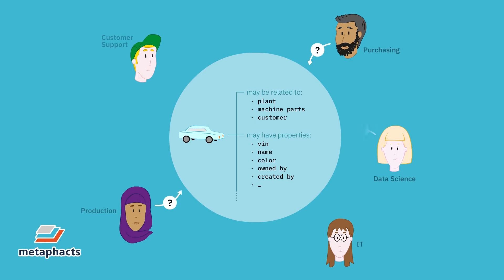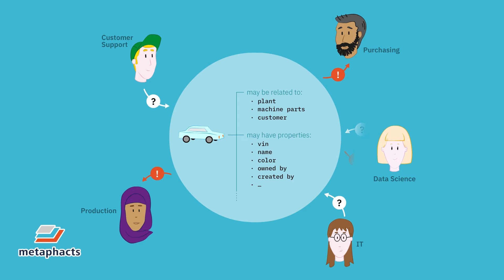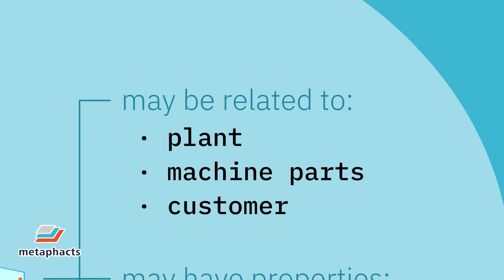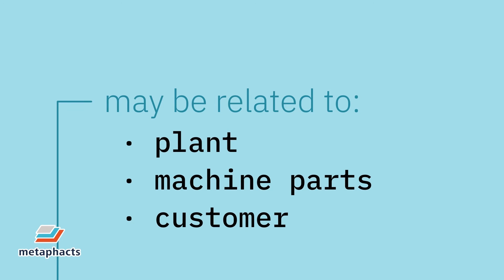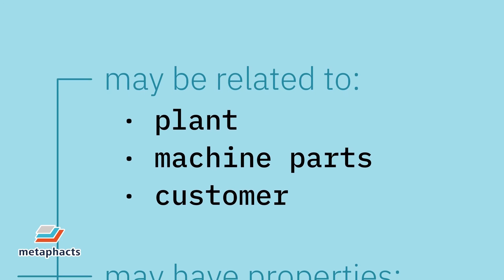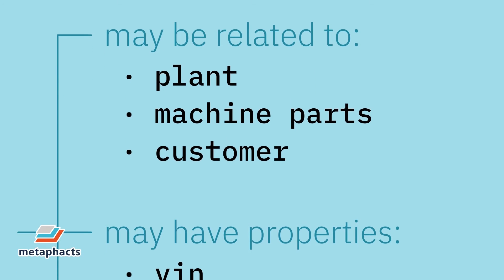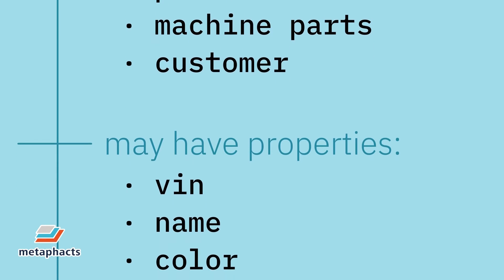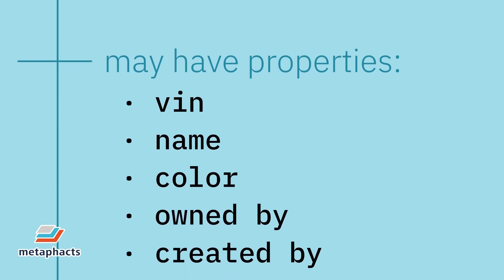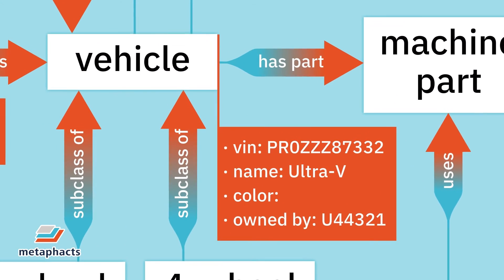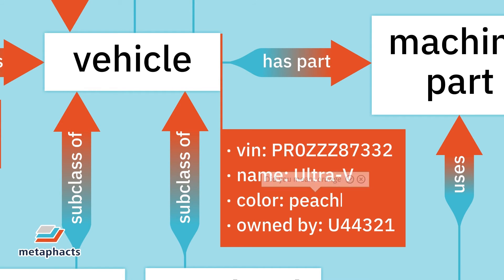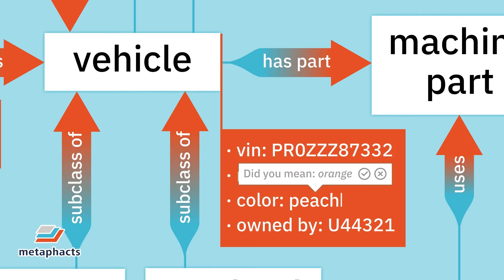Semantic models create a shared understanding of and clear semantics for the metadata available for domain-relevant concepts, and help to bridge the semantic gap between different users, different business units and especially business and IT. Simply put, metadata is data that describes other data, and can include anything from the types of properties or relations we looked at before, or governance information on who owns or is responsible for a certain data set.